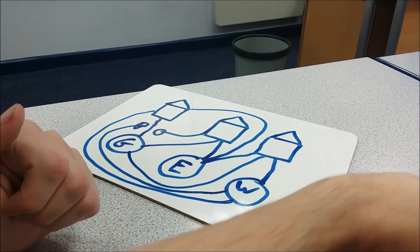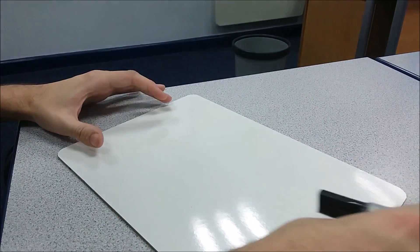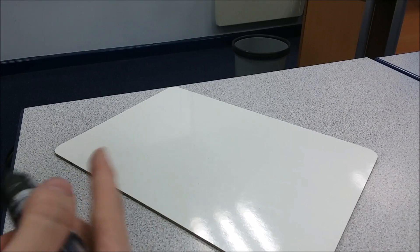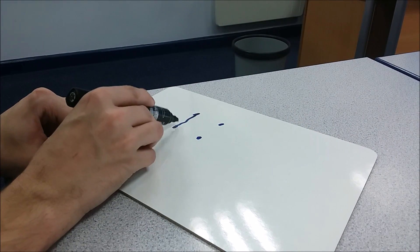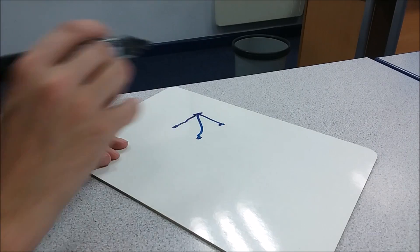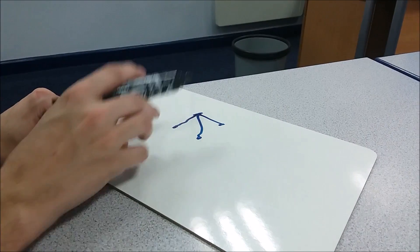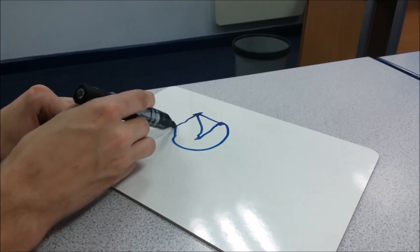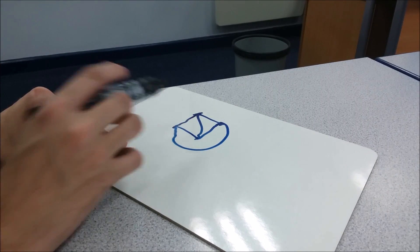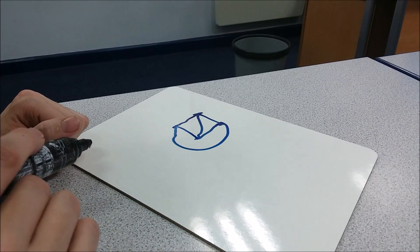Let me show you one more example. A complete graph is one where we have some number of points, and every point connects up to every other point. For example, the complete four graph — which we call K4 — we join each point to every other: that one to that one, that one, and that one. This one connects down here and around, and then the last one connects up. Each of the four points connects to each of the other three.